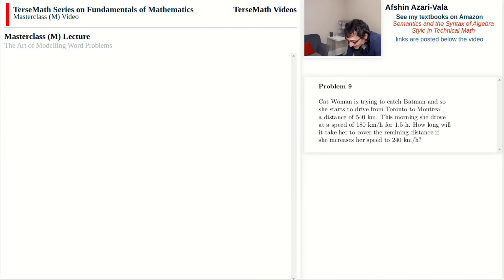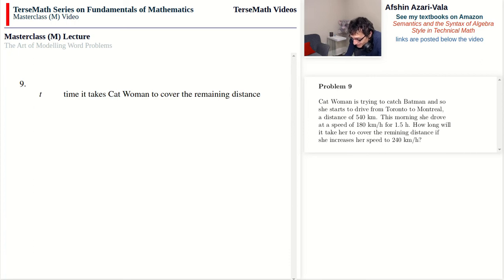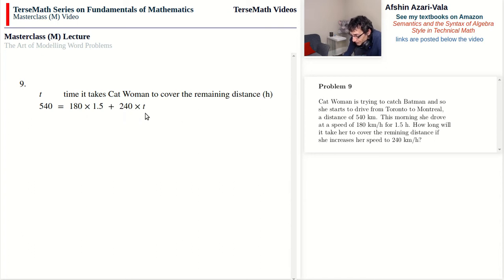Problem 9: Catwoman is trying to catch Batman. She drives from Toronto to Montreal (540 km). This morning she drove at 180 km/h for 1.5 hours. How long will it take to cover the remaining distance at 240 km/h? With t being time in hours: 540 = 180 × 1.5 + 240 × t. Total distance equals distance covered this morning plus remaining distance.